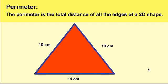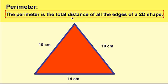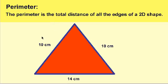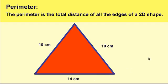So now we want to figure out the parameter, as the definition says — the parameter is the total distance. Therefore we're going to take 10 and add it to 10, then add the sum to 14 in order to figure out the parameter. Because remember, parameter is all about adding. You're not multiplying, you're not subtracting, you're not dividing. When you're finding parameters, you're just adding up all the numbers.